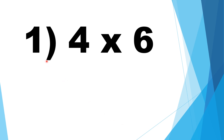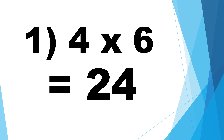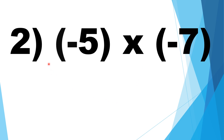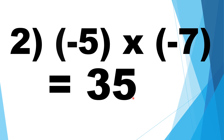Find the product. Number 1: positive 4 times positive 6. Like signs, so the sign of the product is positive. Positive 4 times positive 6 is equal to positive 24. Number 2: negative 5 times negative 7. Negative and negative are like signs, so the sign of the product is positive. 5 times 7 is equal to 35. So, negative 5 times negative 7 is equal to positive 35.